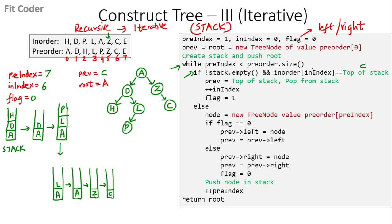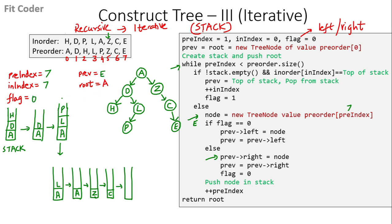In the next iteration, the top of the stack is C and the in-order index also points to C — equal. We set previous to C, pop from the stack, increment in-index to 7, and set flag to 1. Stack is empty again, so we go to the else part. We create a new node with value E (the seventh index of the pre-order traversal). Flag is 1, so right of C points to E. Previous becomes E, flag becomes 0, we push E to the stack, and increment pre-index to 8. Pre-index equals the size of the array (8), so the loop condition is false and we return the root node.